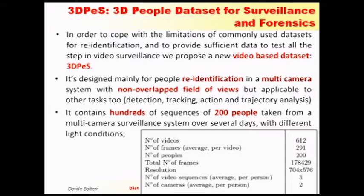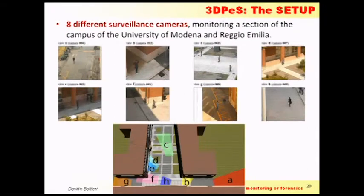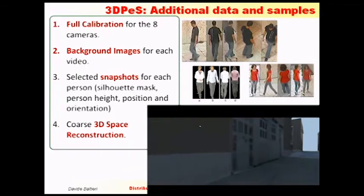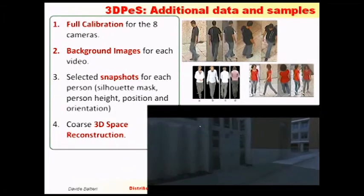I did some tests, but there were no publicly available datasets at the time, so I had to create my own. I created a very large dataset for re-identification in a multi-camera system with non-overlapping fields of view. It contains 612 videos of 200 people taken over the course of several days with several lighting conditions. You probably recognize the place — and probably own the dataset. This shows the topology of the 8 cameras I used, and a sample of the dataset with different views and different people.